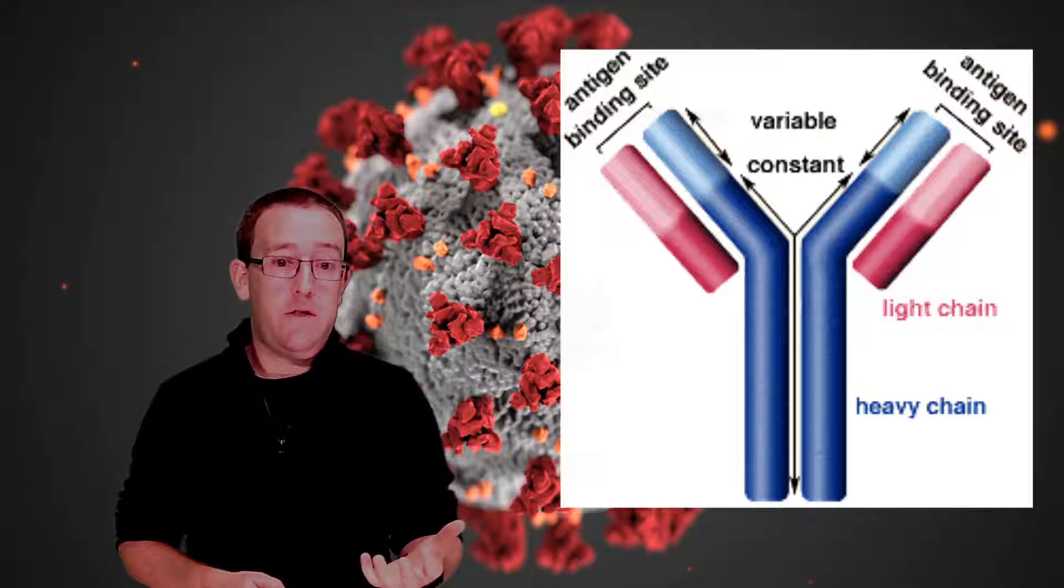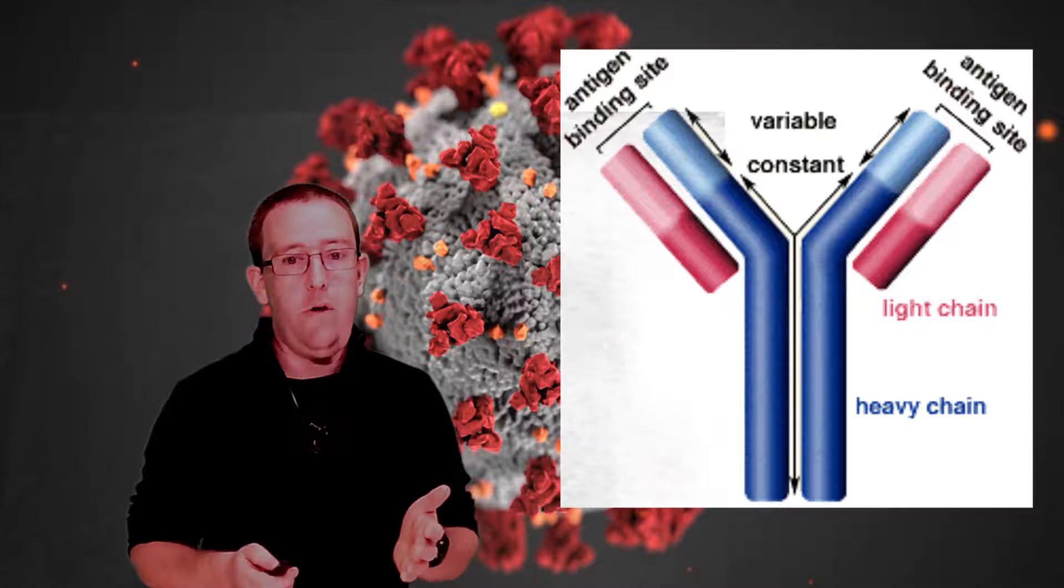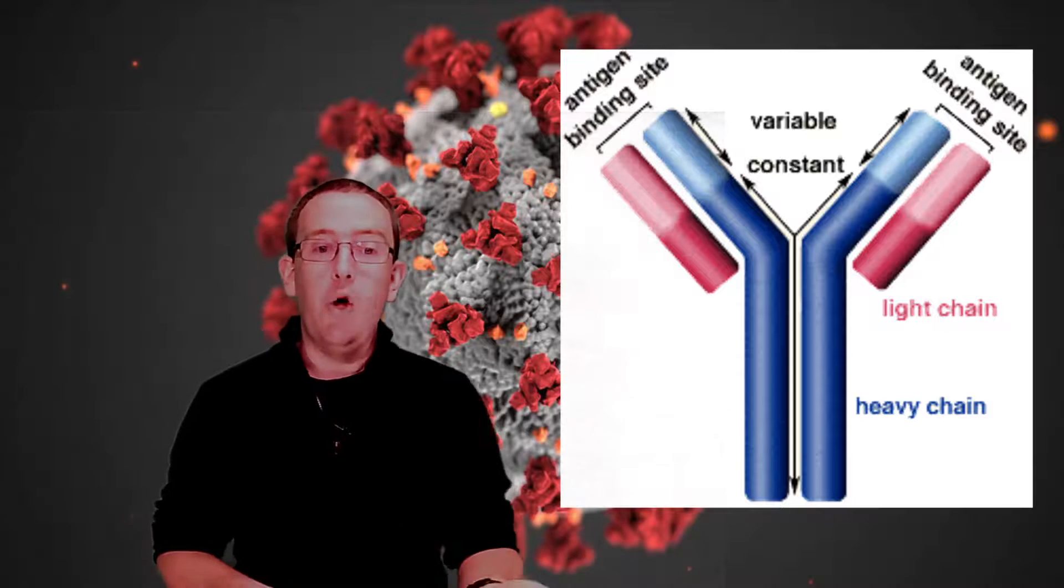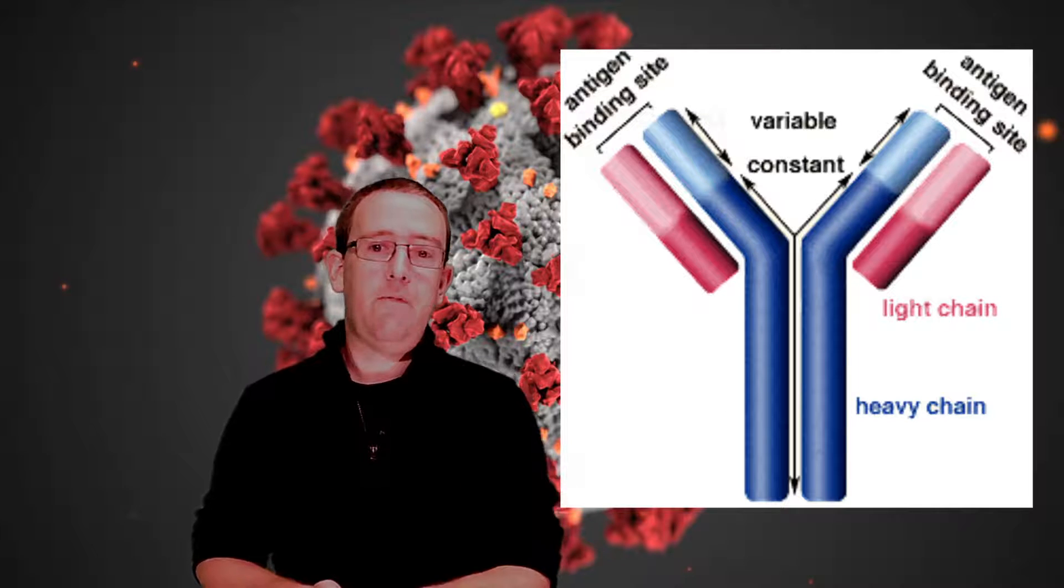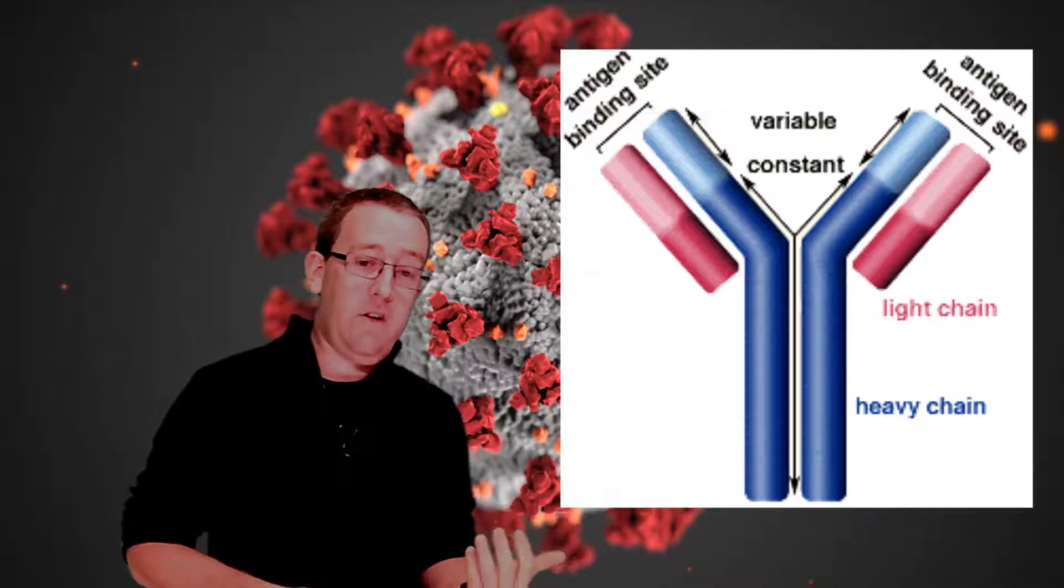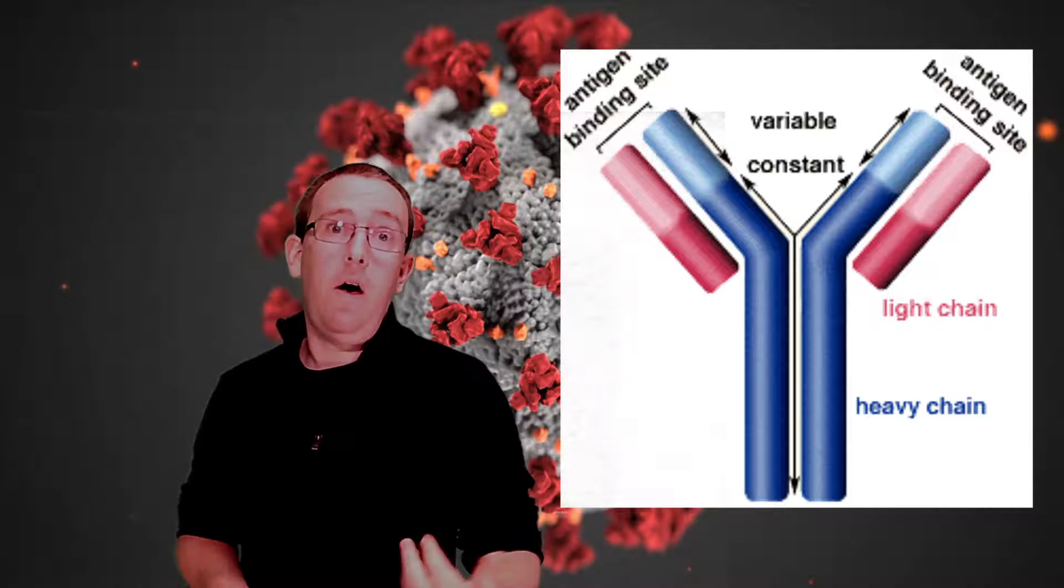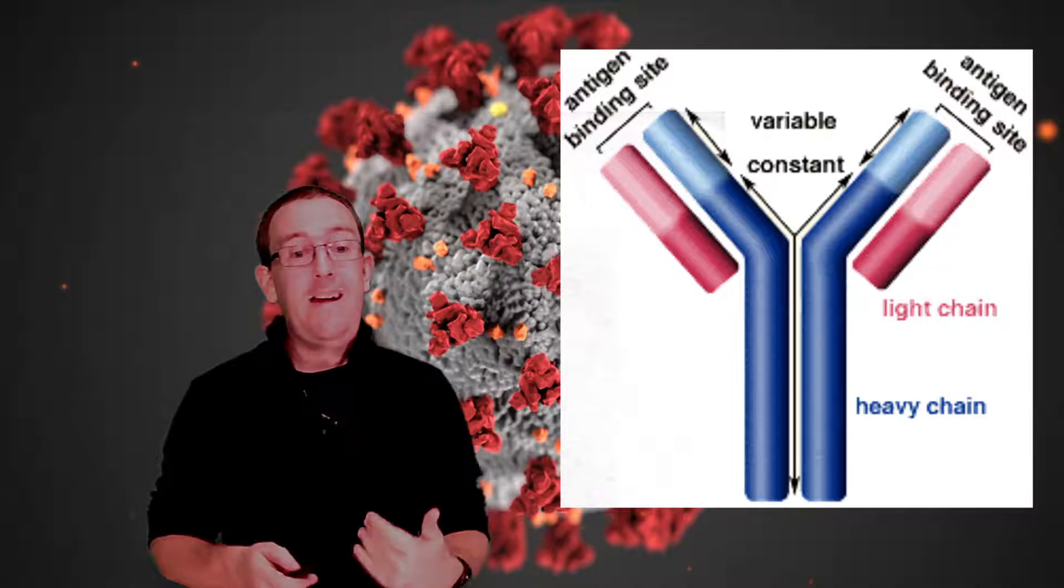They bind onto those S proteins, or at least part of those S proteins, and that activates the immune system, immobilizes them, and stops them being very effective. Our antigen binding site's at the top, and at the bottom we've got a bit that activates other parts of the immune system.